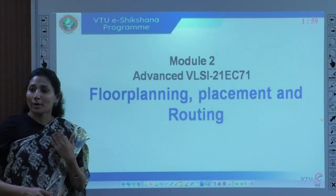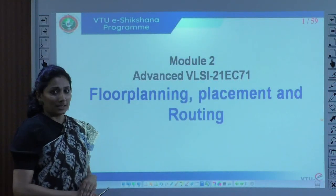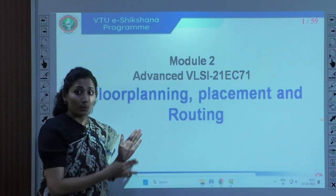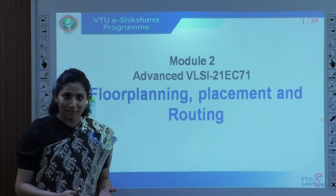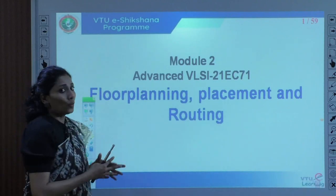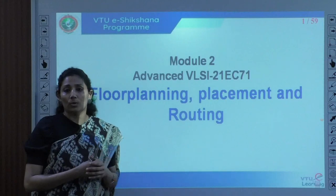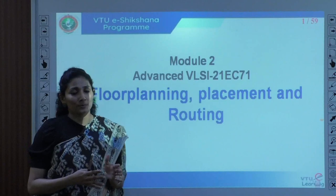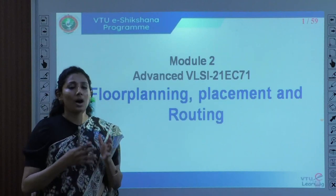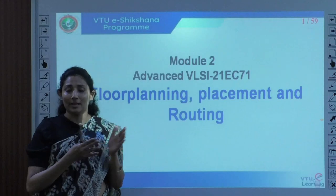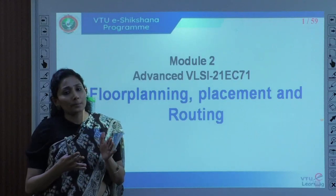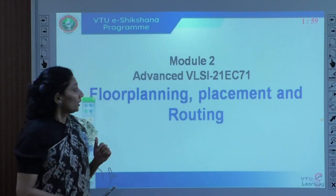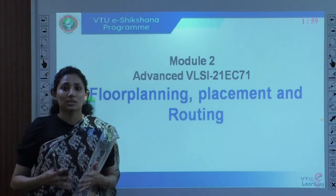Module 2 of Advanced VLSI covers planning, placement, and routing — something new that you have never learned before. In Module 1, you were given the general VLSI design flow — how it happens, with two parts: front end and back end. The back end part is usually called the physical design part, and it has various stages.